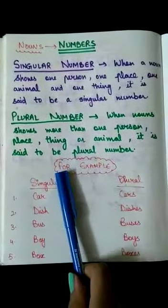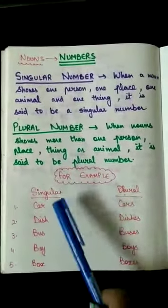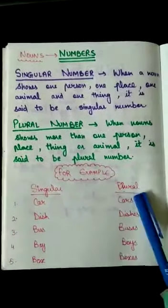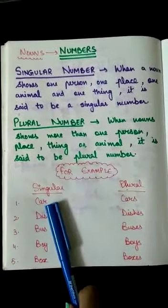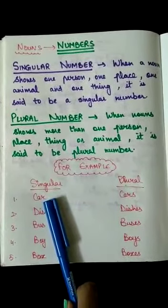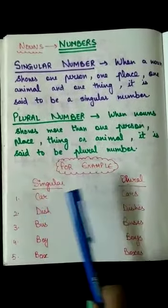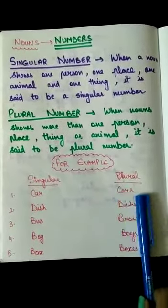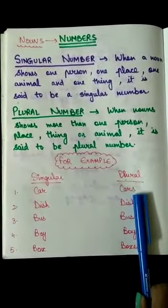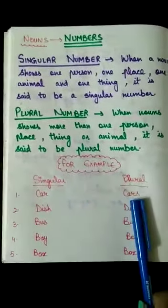I am having some more examples over here, which I have already written over there. This is the singular side and this one is the plural side. Now, what will I do in order to convert it into the plural? See, ma'am has written S with it to convert it into the plural. Car, cars.